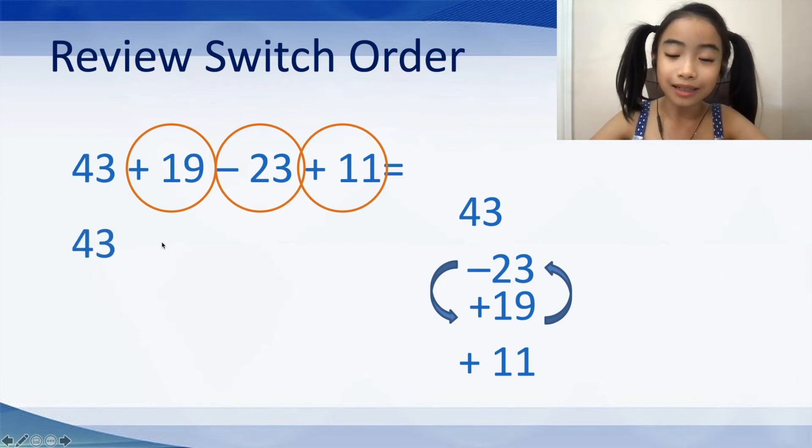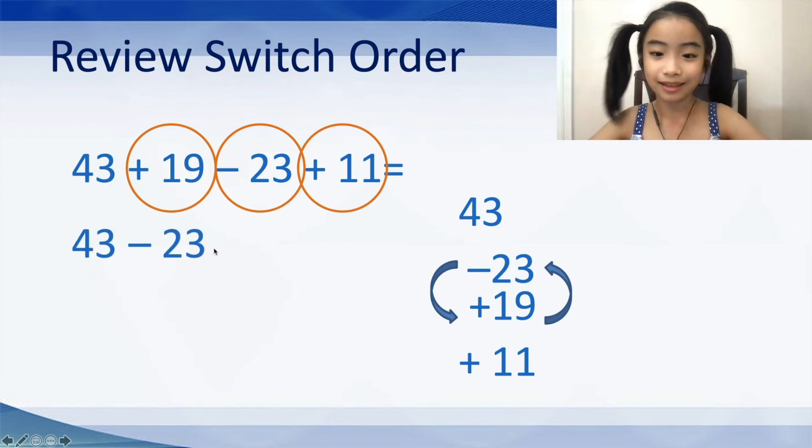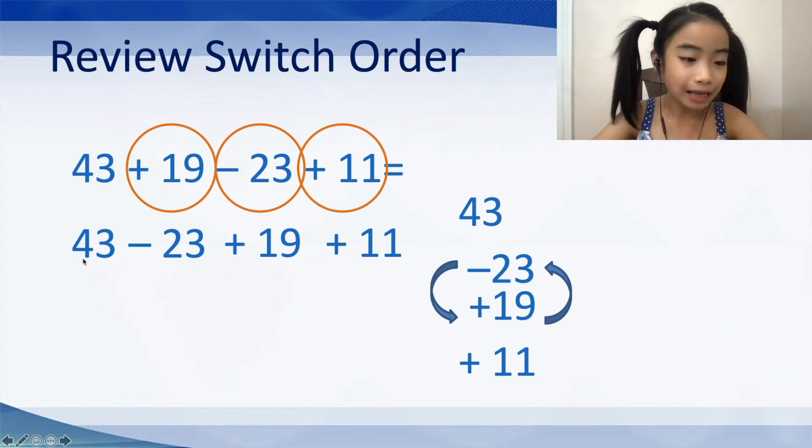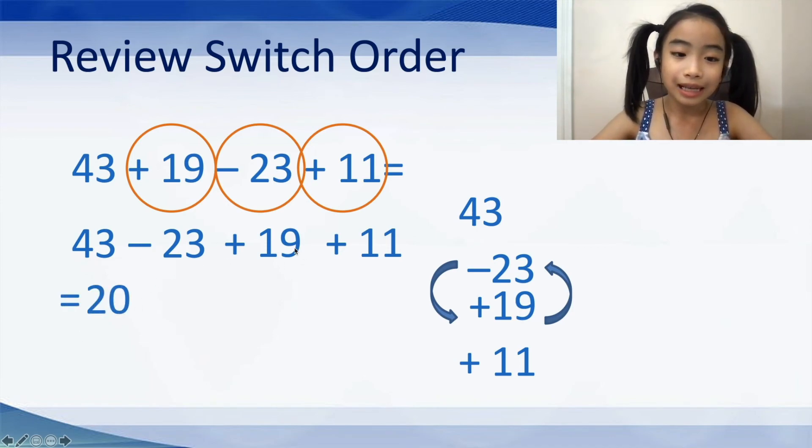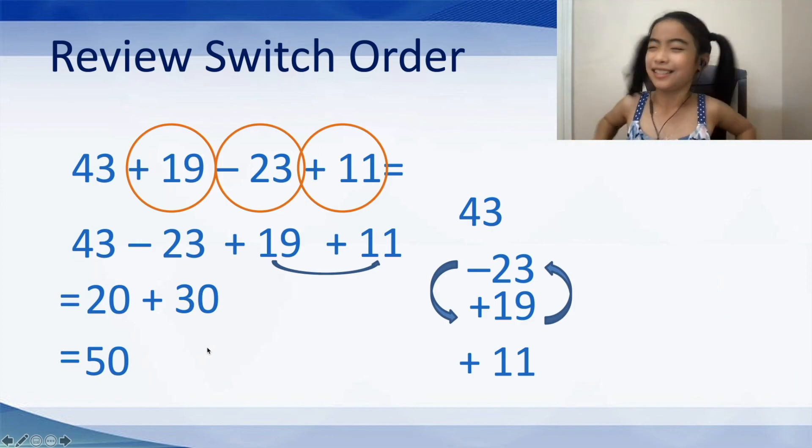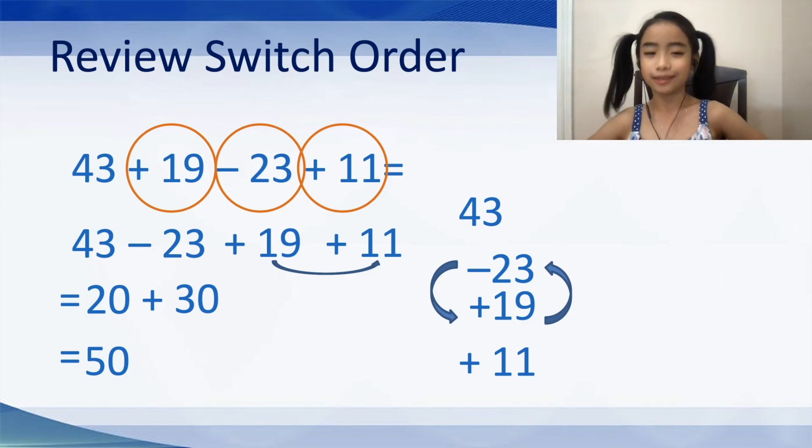So, we have 43, then minus 23, that's easy, plus 19, plus 11. Well, plus 19 and plus 11 is easy, too. So, here we have 43 minus 23, which equals 20. And then, 19 plus 11, well, that's easy, because it equals 30. So, 20 plus 30 equals 50. And we have the answer. Wasn't that easy? I thought it was much easier than doing it from left to right.